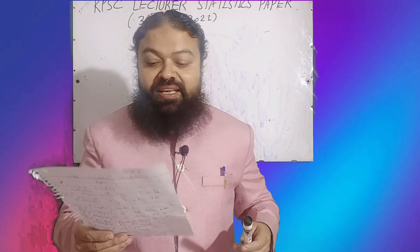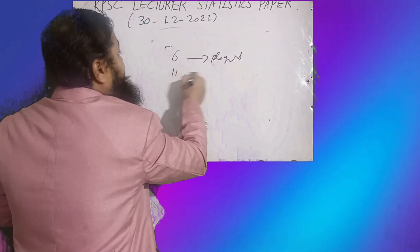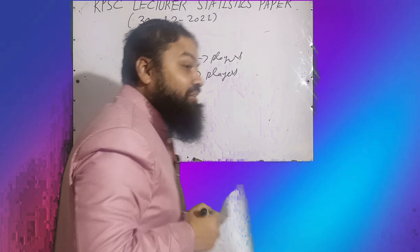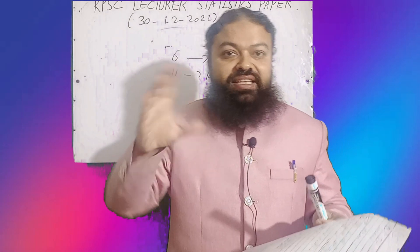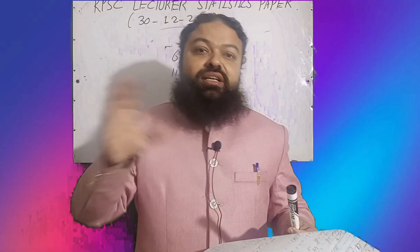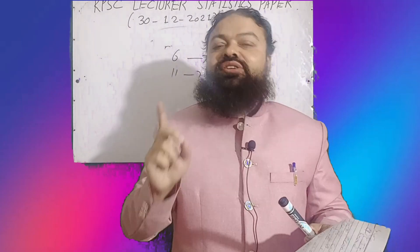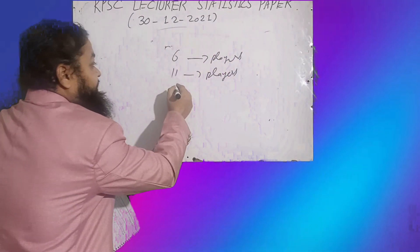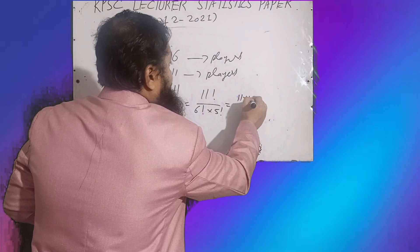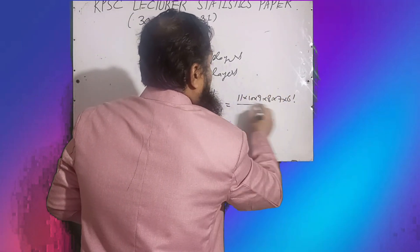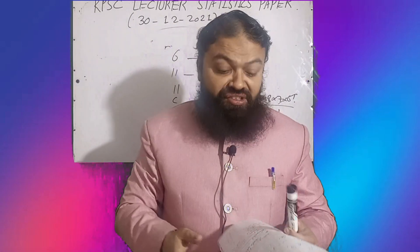The next question: in how many ways can 6 players be selected from 11 players? Whenever we select something and order is not important, we use combinations. The method is 11C6 = 11! / (6! × 5!) = (11 × 10 × 9 × 8 × 7 × 6!) / (6! × 5!) = 462. The answer was 462 in the exam.